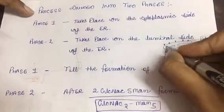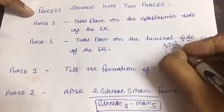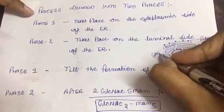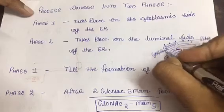So this is the luminal side, this is the lumen of endoplasmic reticulum, and this outside is the cytoplasmic side.